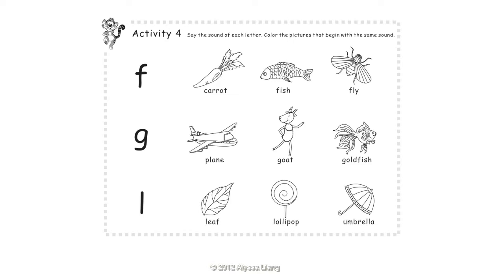Color the pictures that begin with the same sound. F: Fish. Fly. G: Goat. Goldfish. L: Leaf. Lollipop.